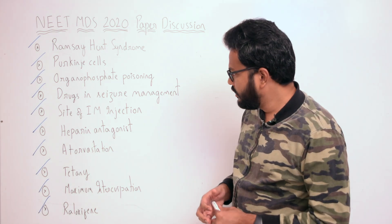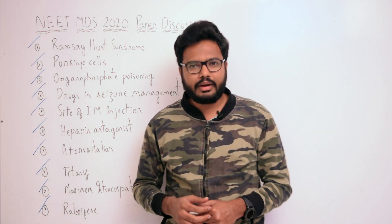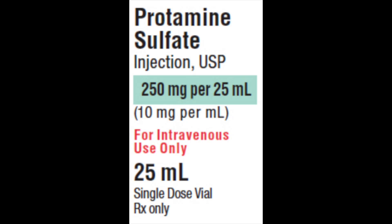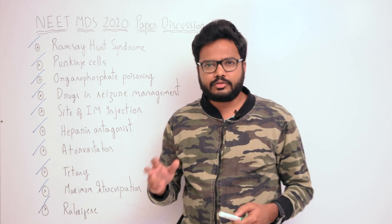Next, heparin antagonist. As covered in a previous revision class, the heparin antagonist is protamine sulfate. Protamine sulfate is a strongly basic, low molecular weight protein obtained from the sperm of certain fish. Given intravenously, it neutralizes heparin weight for weight — one milligram is needed for every 100 units of heparin. It is used when heparin action needs to be terminated rapidly, for example after cardiac or vascular surgery and for heparin-induced bleeding.